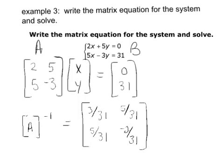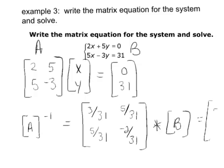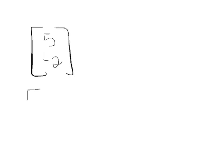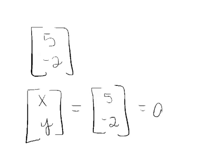You have already entered B into your calculator too. With A inverse in your window, hit the multiplication button, select B, and hit enter again. The variable matrix — which is X and Y — pops up as 5 and negative 2. So that is your answer: X equals 5, Y equals negative 2.